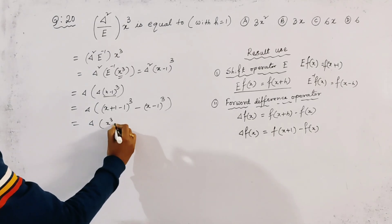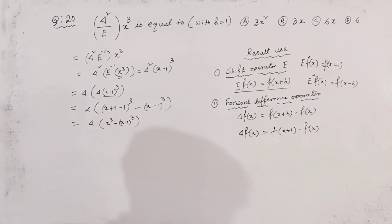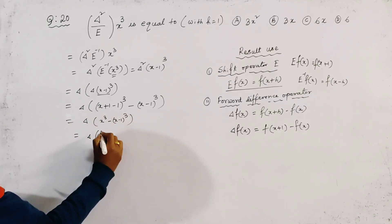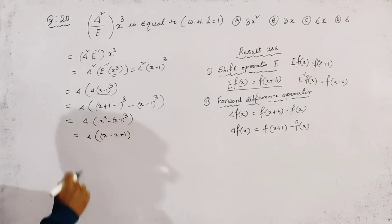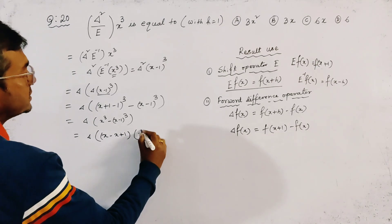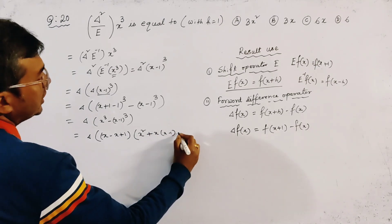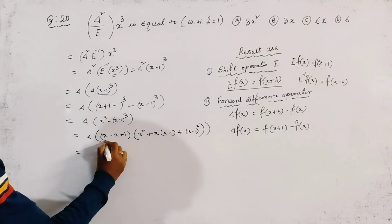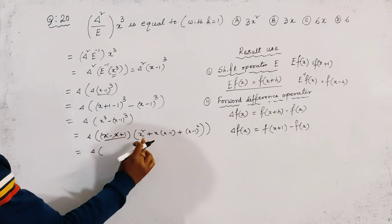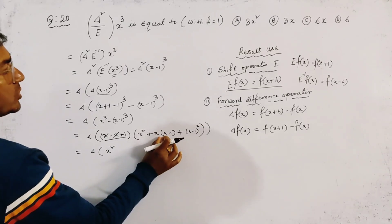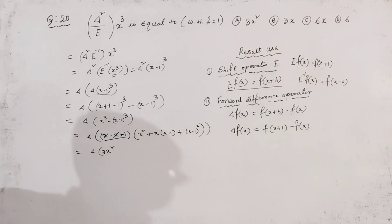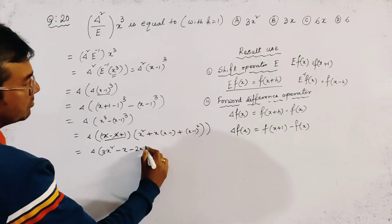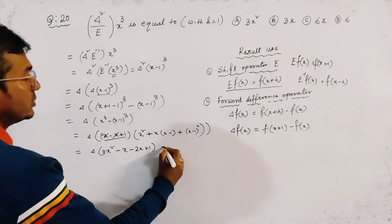We apply the a³ minus b³ formula. This gives Δ of (x minus (x-1)) times (x² + x(x-1) + (x-1)²). The (x minus (x-1)) factor cancels to 1, leaving Δ of (x² + x² - x + x² - 2x + 1), which simplifies to Δ of 3x² minus 3x plus 1.